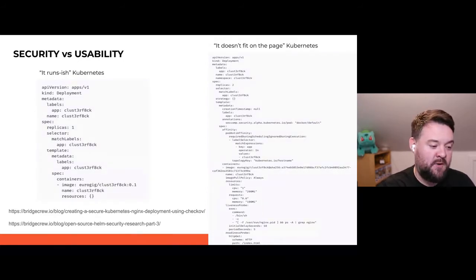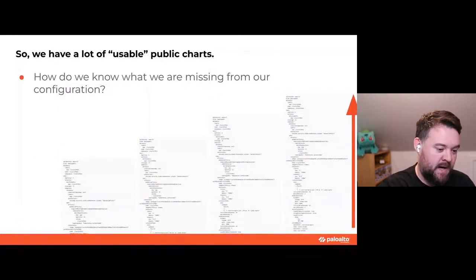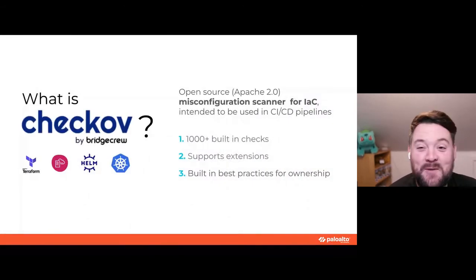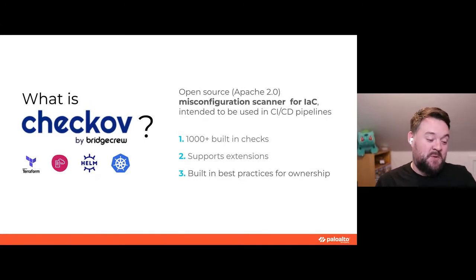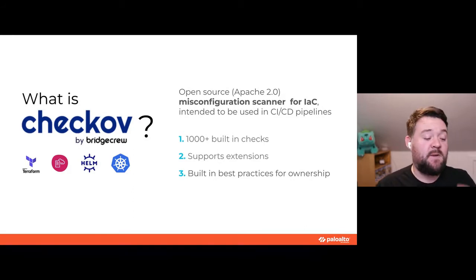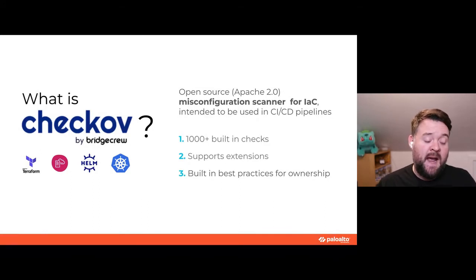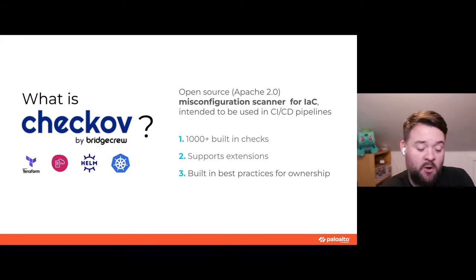How do we go from the small manifest to the big secure one? How do we know what we're missing? We have an open source tool called Checkov that powers a lot of the code visibility within Prisma Cloud. It has thousands of built-in checks — you don't need a separate policy pack. It builds in best practices for things you should be thinking about in Helm, Terraform, and Kubernetes. It's designed for CI and integrates with GitHub Actions really easily.